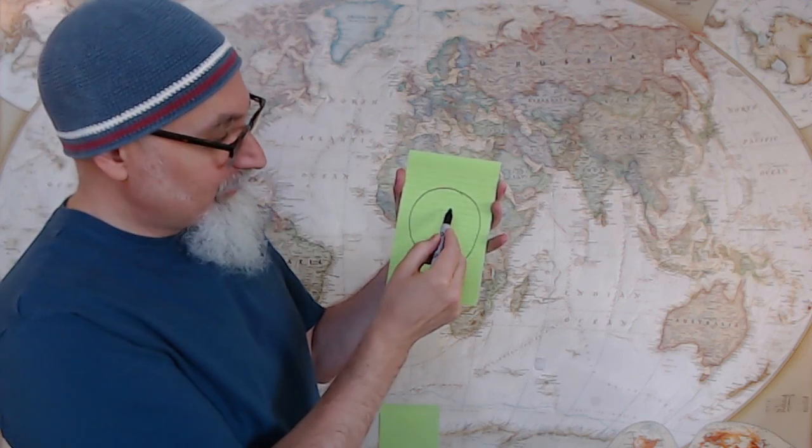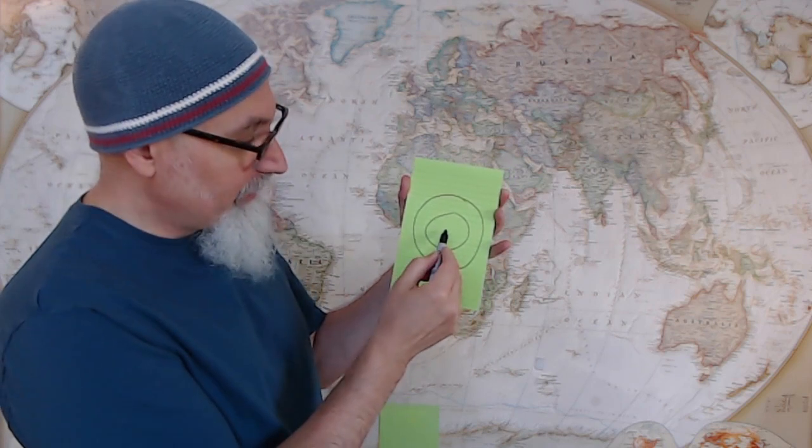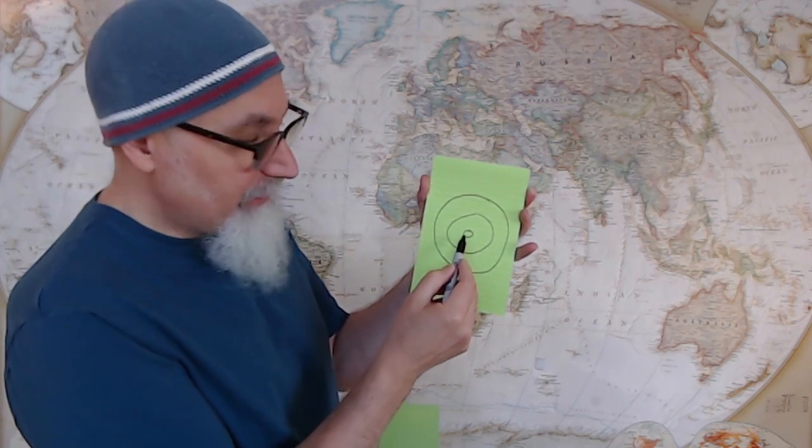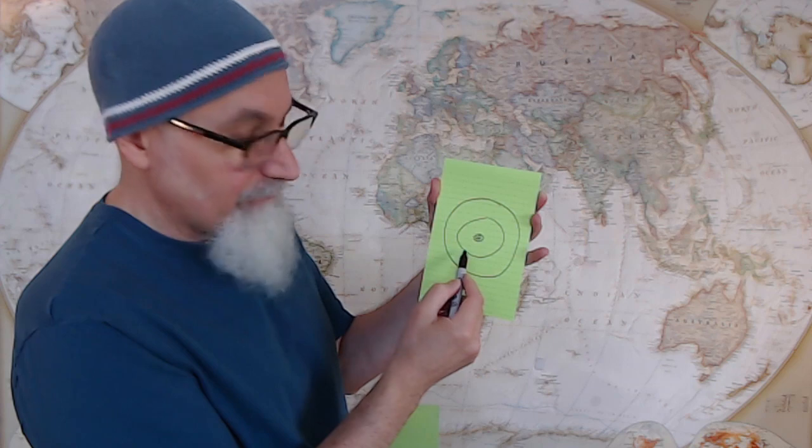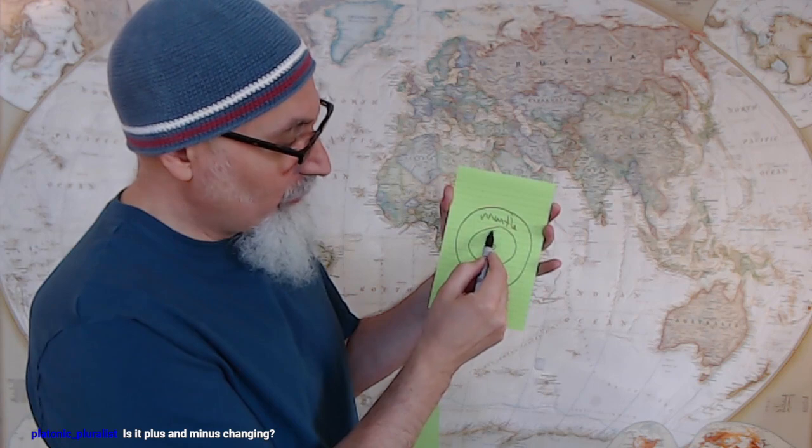Crust, mantle would be like this. Not mantle, sorry, the outer core. So here's the inner core - the inner core is solid. This is mantle, this is outer core.